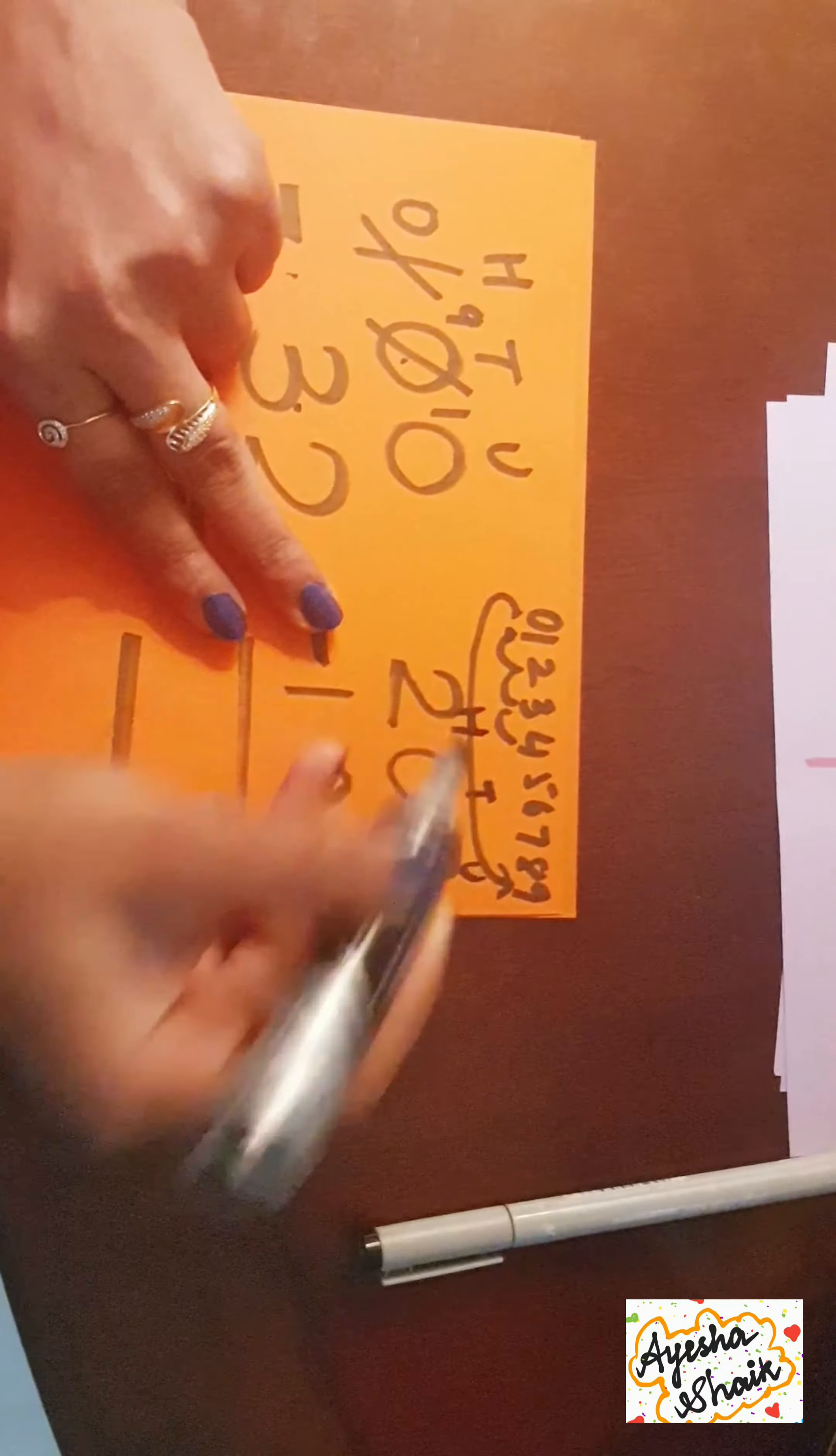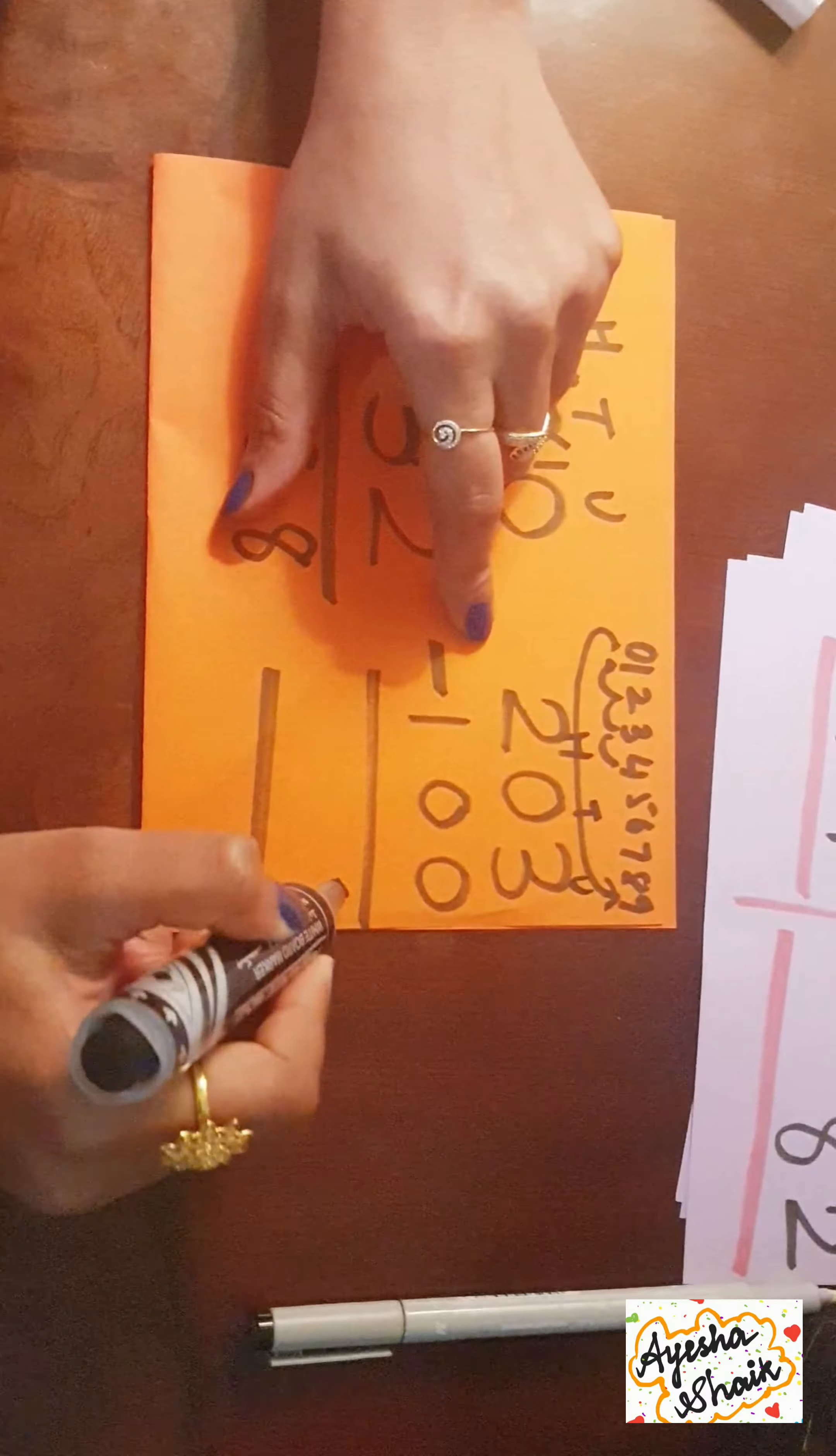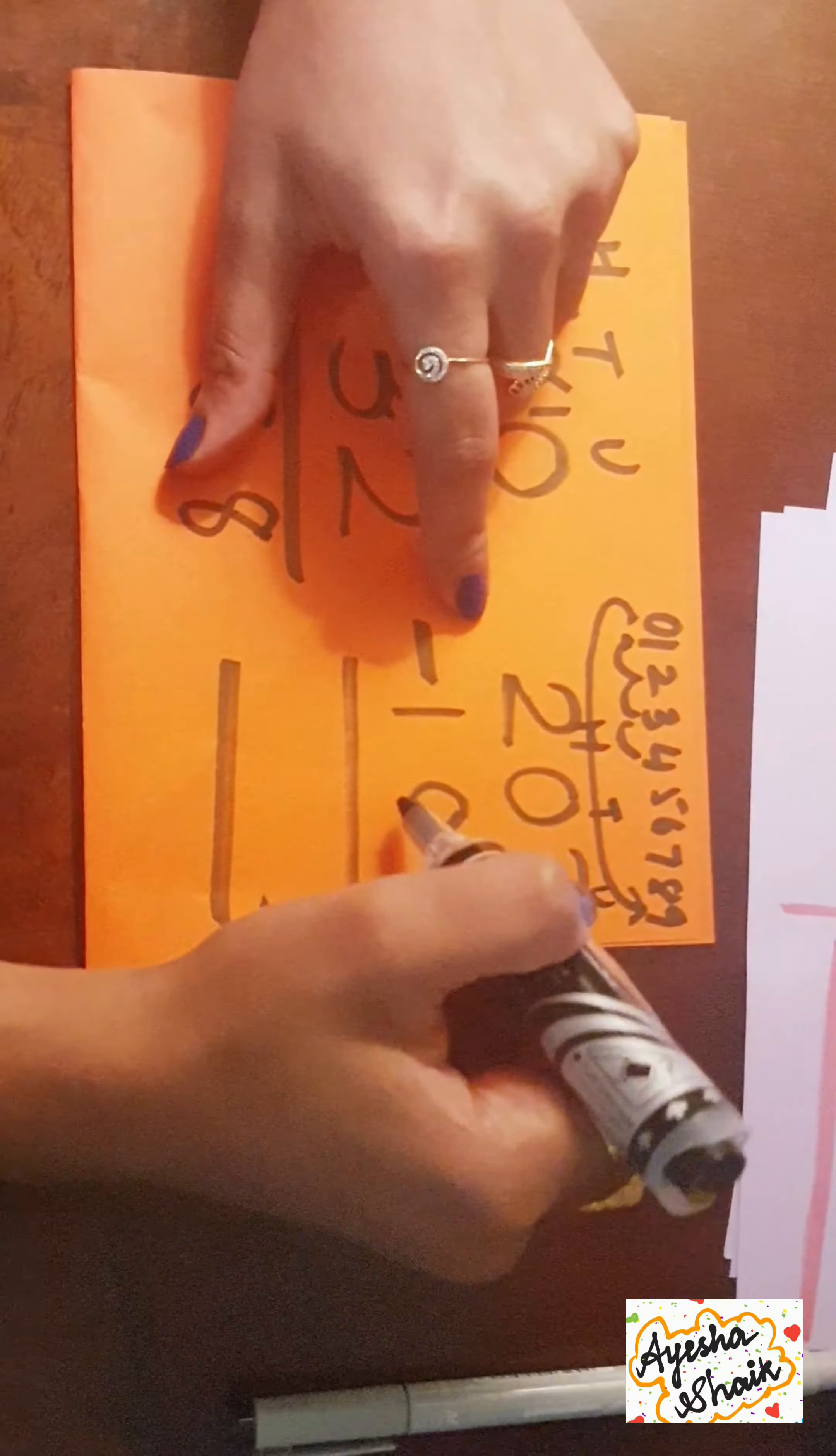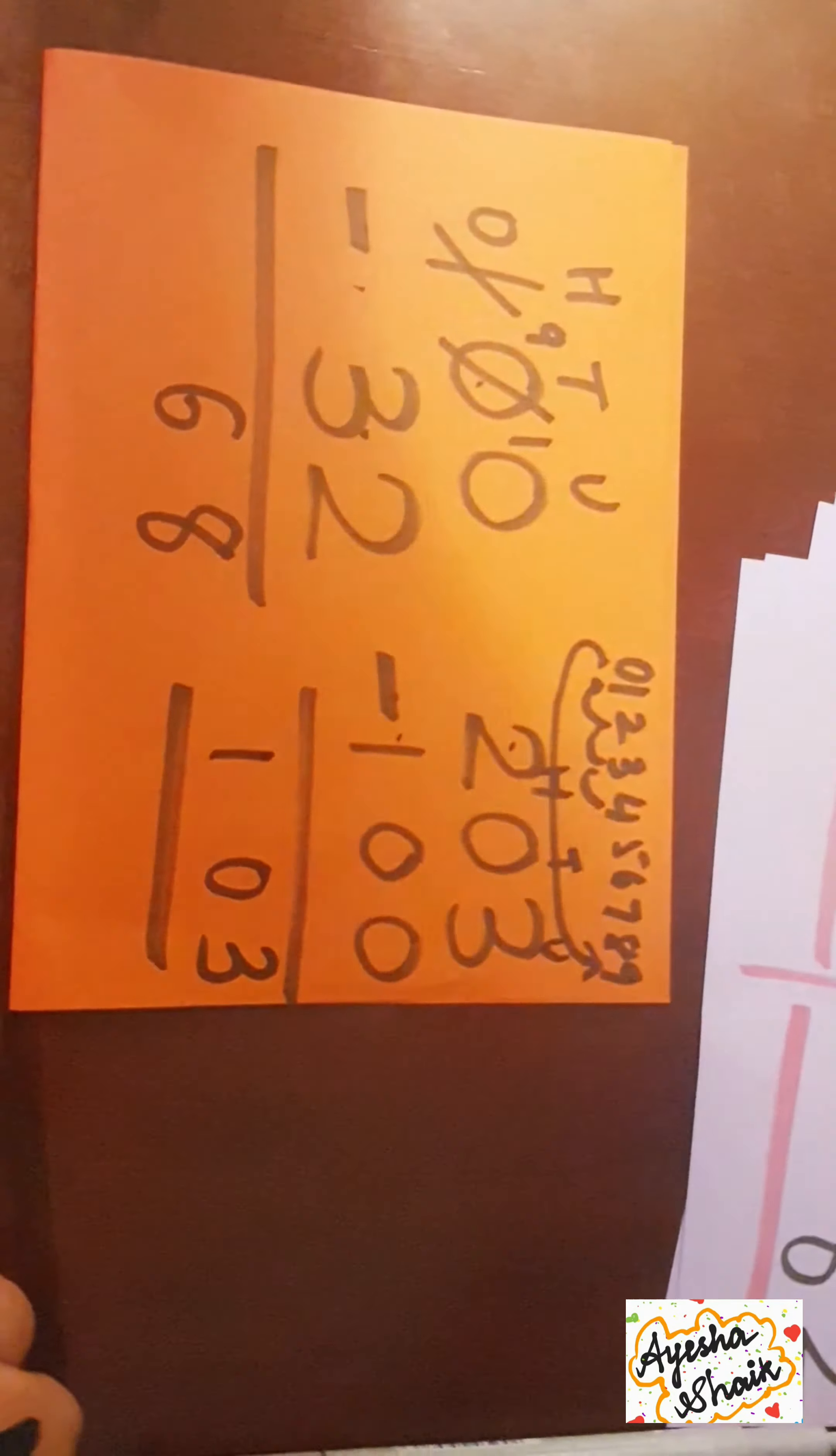Units, tens, and hundreds. Three take away zero - three is already a big number, so I don't need to borrow. Three minus zero is three. Zero minus zero is zero. Two minus one is one. That's it.